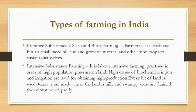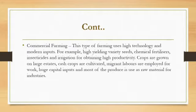Intensive subsistence farming is labor-intensive farming practiced in areas of high population pressure on land. High doses of biochemical inputs and irrigation are used for obtaining high production. Every bit of land is used — terraces are made where the land is hilly, and swampy areas are drained for cultivation.